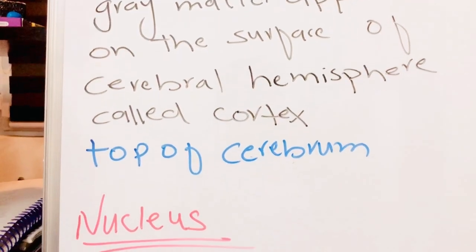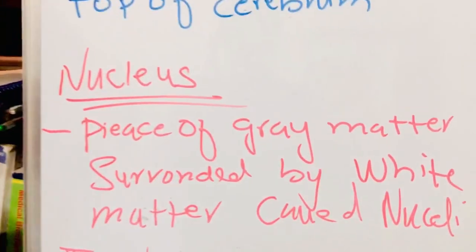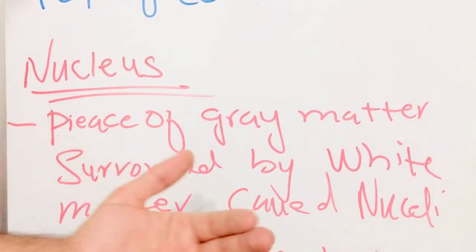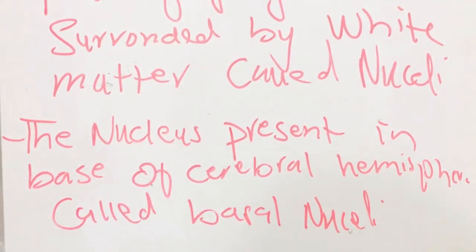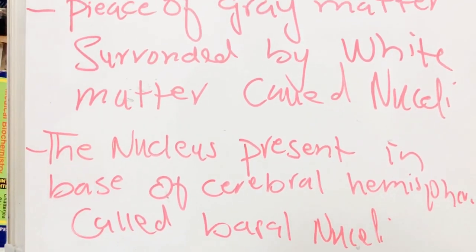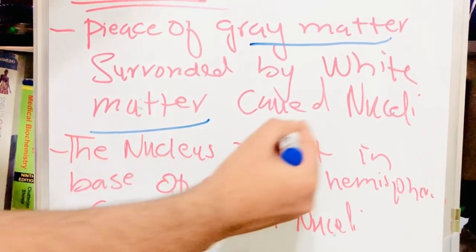Now we will talk about nucleus. There are two types of nucleus. Generally, nucleus means the house of organelles or the basic structural and functional control system of the cell. But nucleus in the central nervous system means a piece of gray matter which is surrounded by white matter — that is called a nucleus or nuclei. The nucleus present at the base of the cerebral hemisphere is called our basal nuclei.